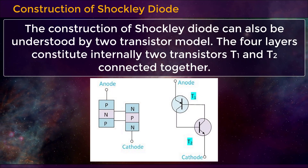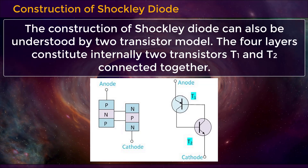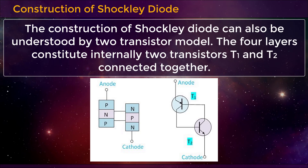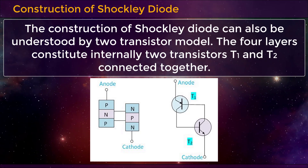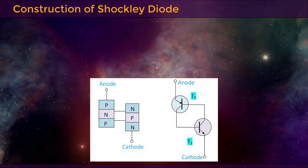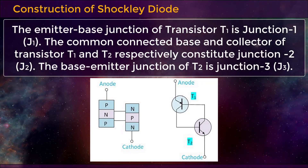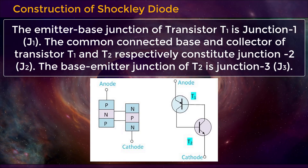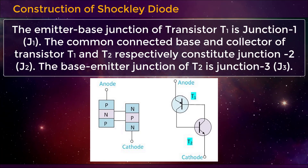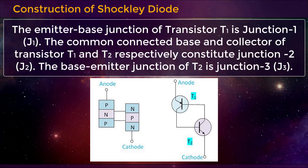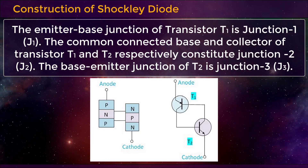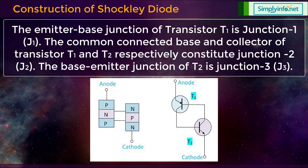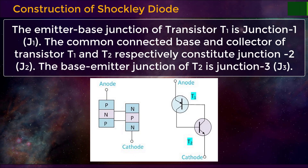The construction of Shockley Diode can be understood by the two-transistor model. The four layers constitute internally two transistors, T1 and T2, connected together. The emitter-base junction of transistor T1 is junction 1, i.e. J1. The common connected base and collector of transistors T1 and T2 respectively constitute junction 2, i.e. J2. The base-emitter junction of T2 is junction 3, i.e. J3.